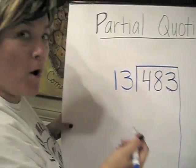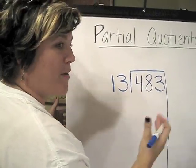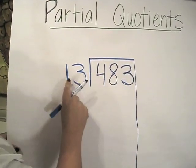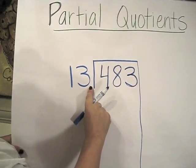We're going to be working with multiples with our friendly numbers. I'm looking at 483 divided into 13 groups.